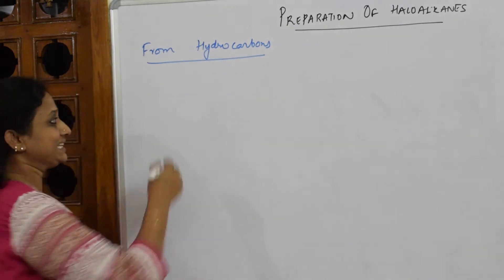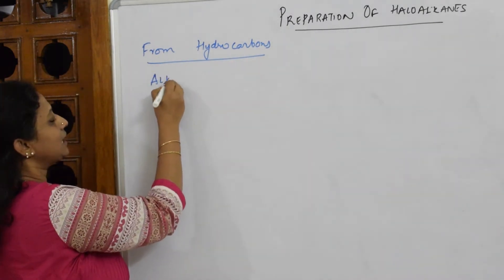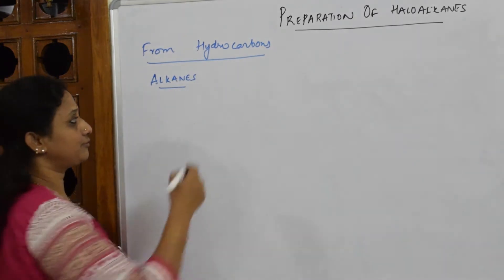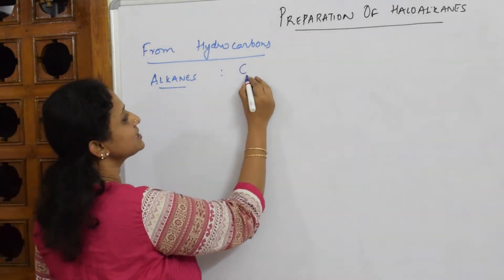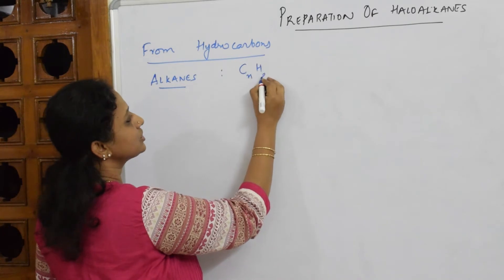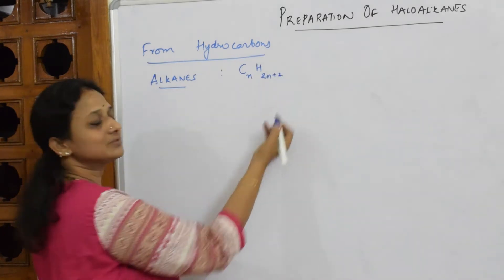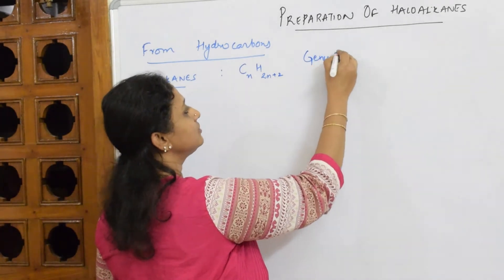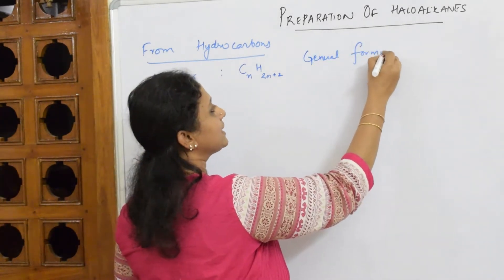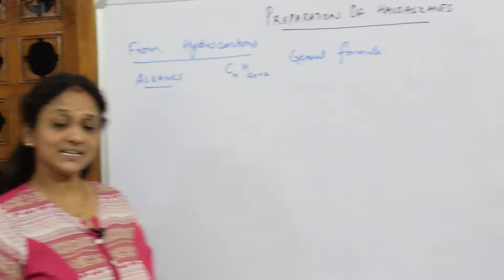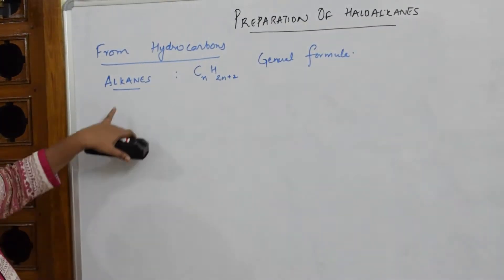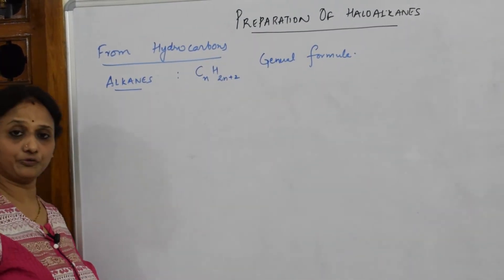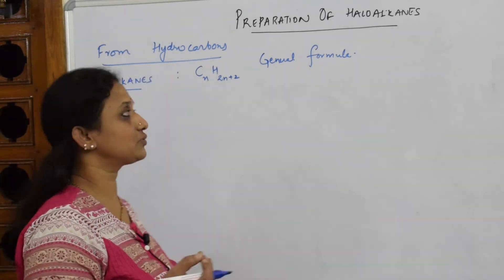The first hydrocarbon we will use is alkanes. The general formula for alkanes is CₙH₂ₙ₊₂. Alkanes undergo free radical halogenation to form haloalkanes.